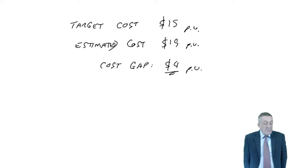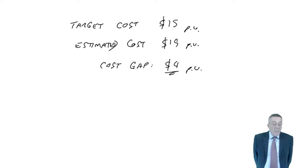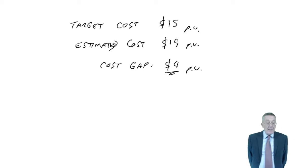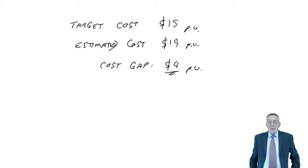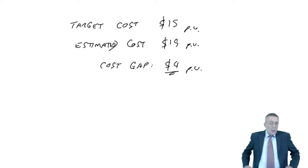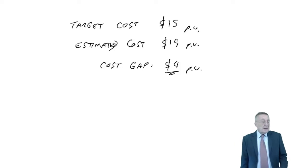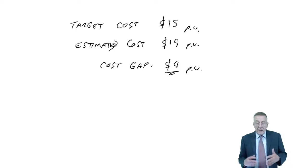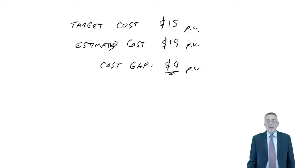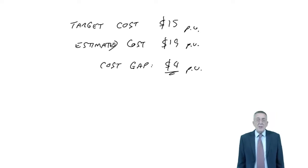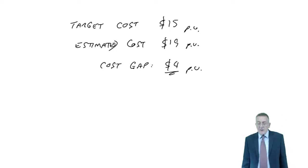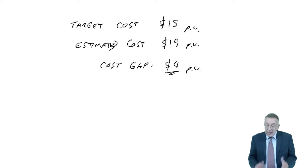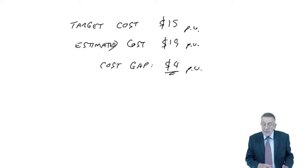The question is what we're going to do about it — possible ways of attempting to close that cost gap. Perhaps we could put the price up, but that's hard. If our sales department have estimated a reasonable selling price, putting the price up isn't going to achieve much because it'll mean we don't sell them. We've got to focus on the costs. How can we get the costs down from 19 down to 15?